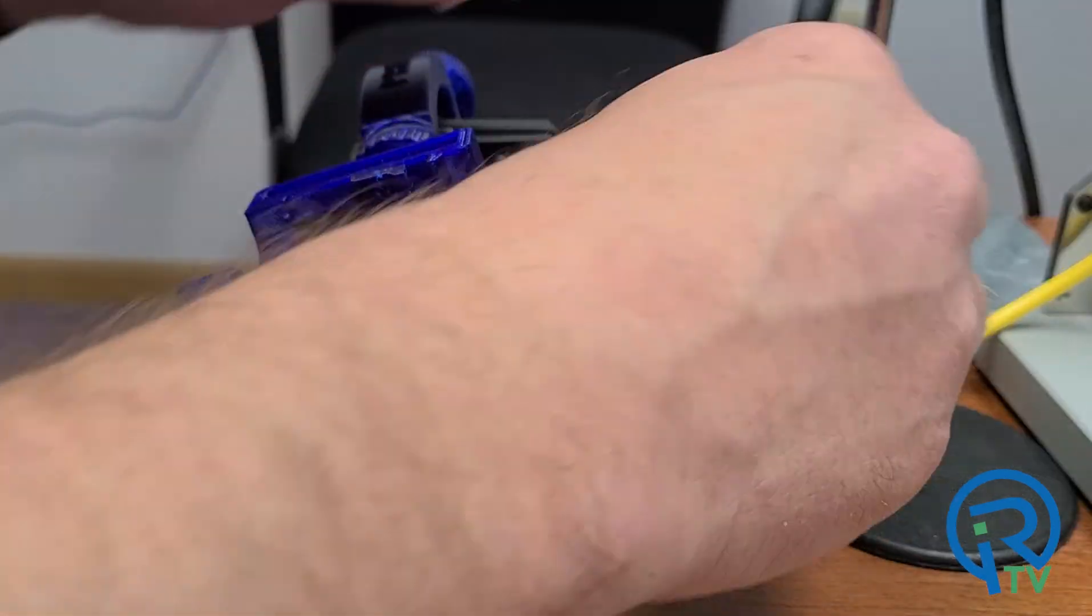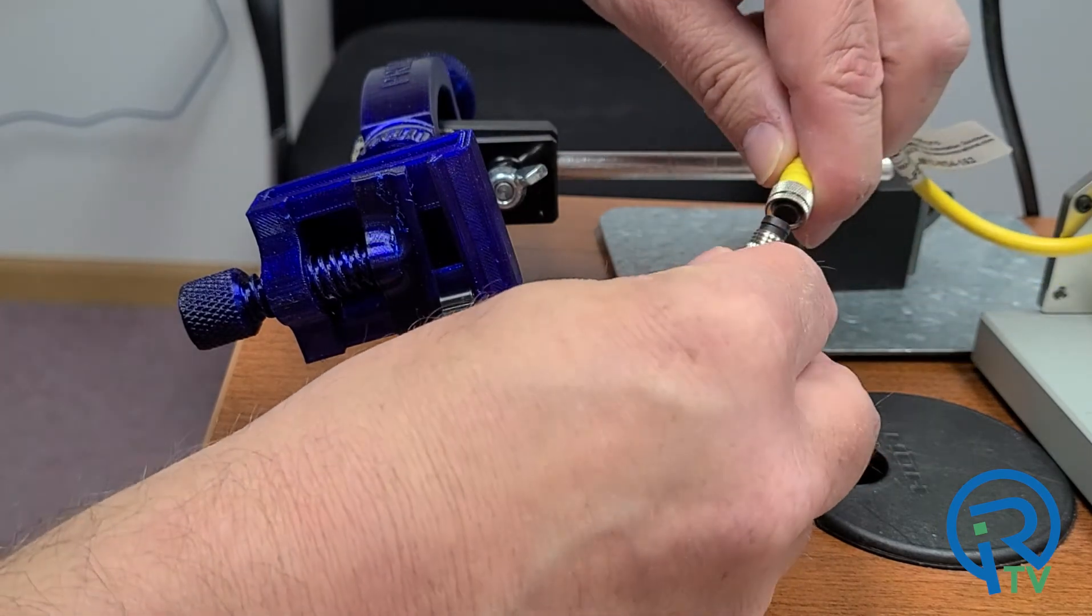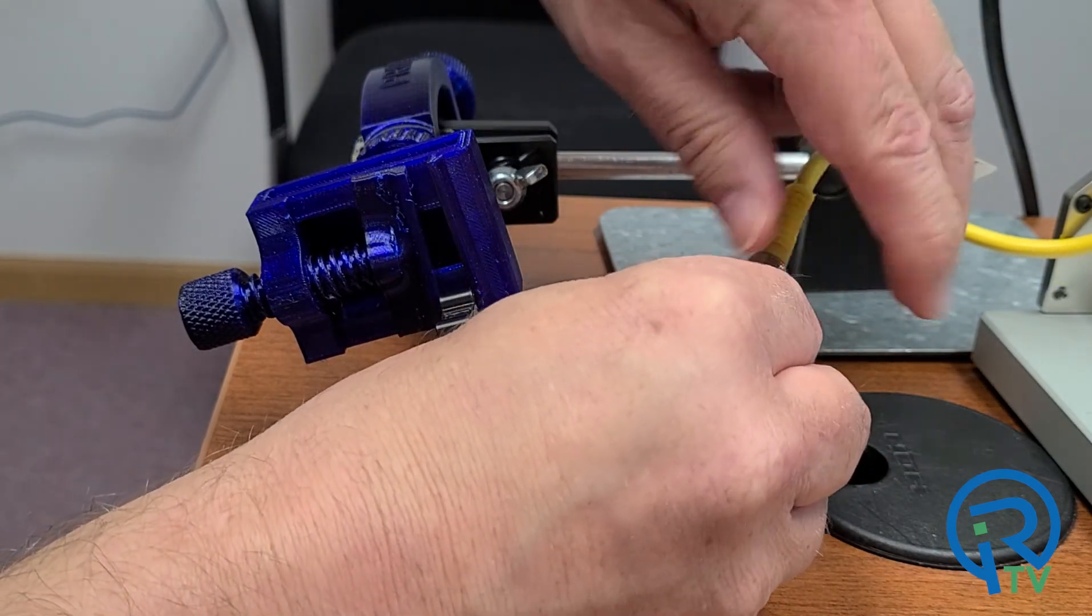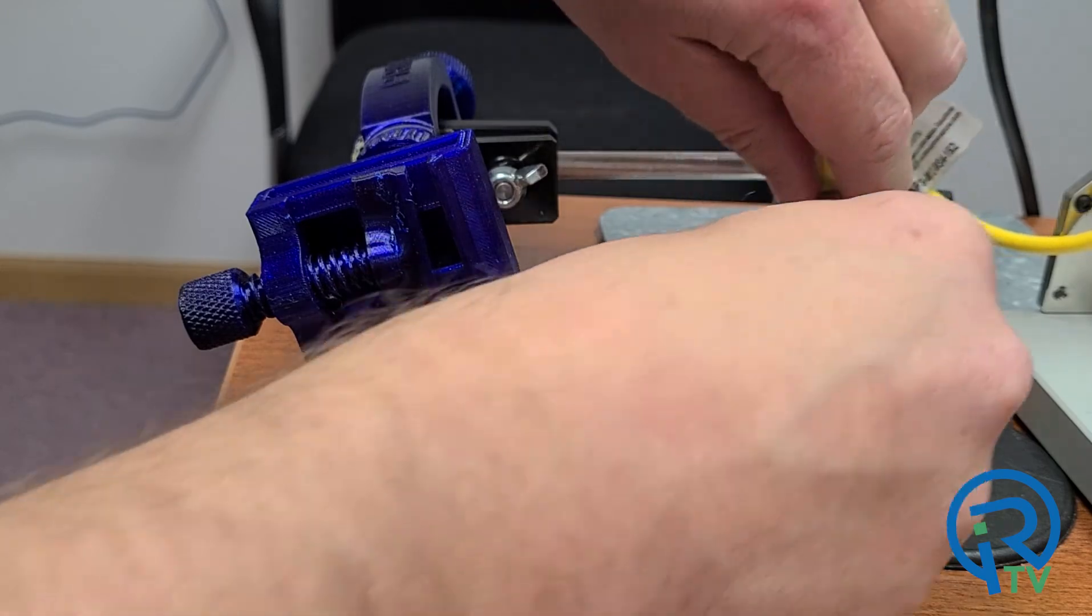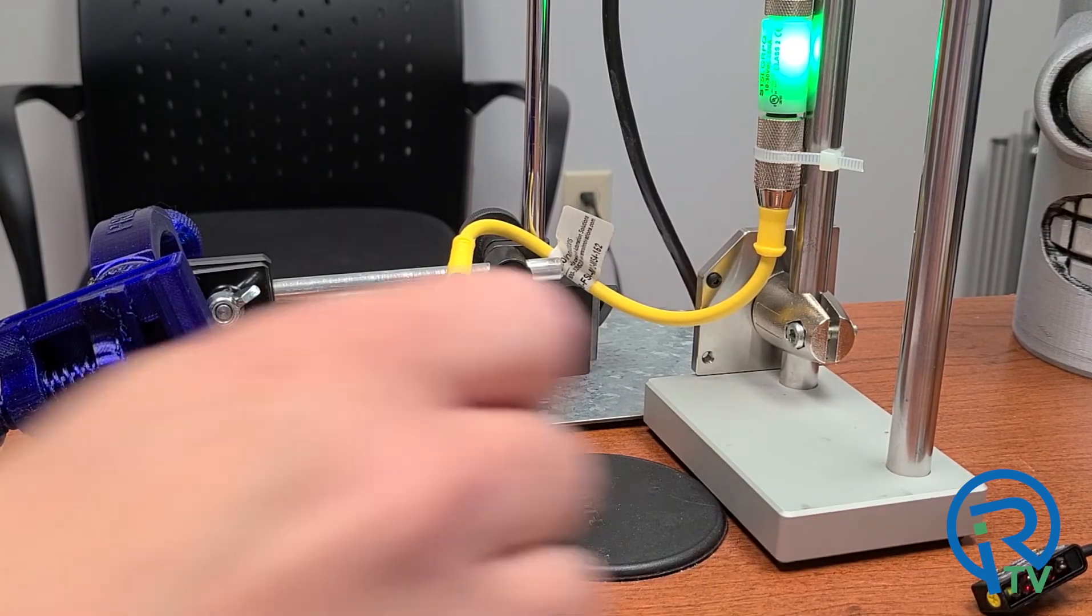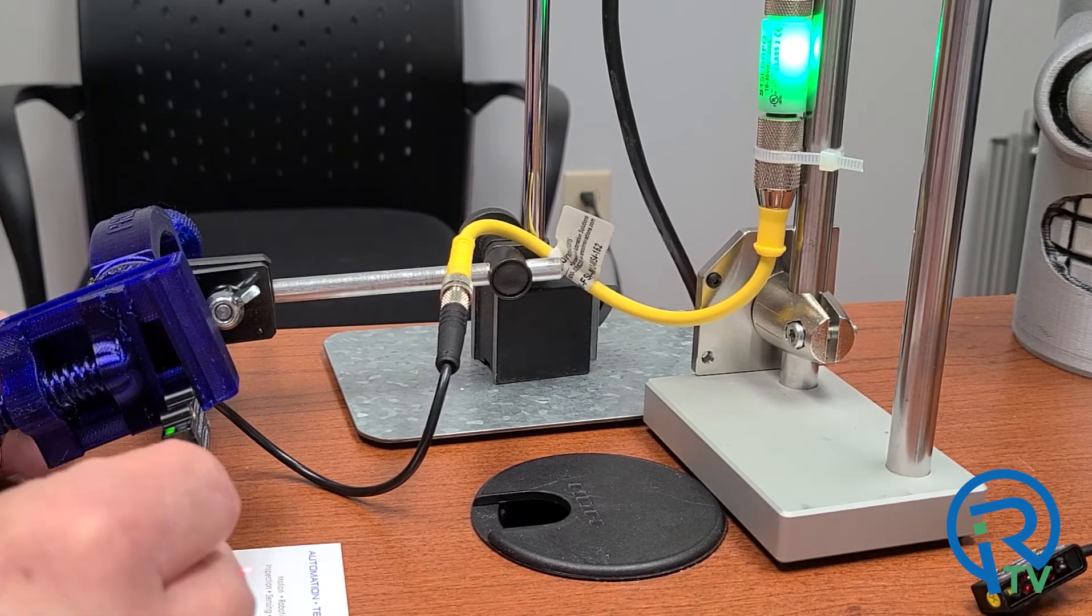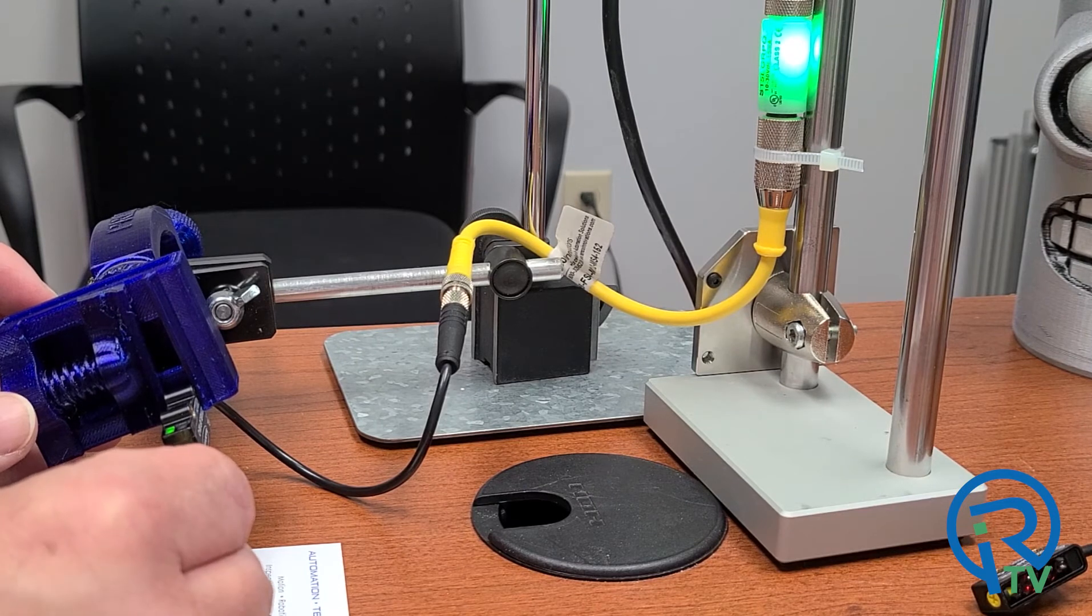This particular model has an M8 4-pin connector, bipolar NPN and PNP output and it's light on mode, meaning that when it senses the target the output will turn on. I've got it connected to the indicating light over to the right. The sensor itself has a three turn mechanical adjustment.